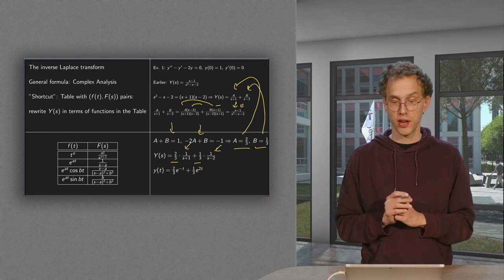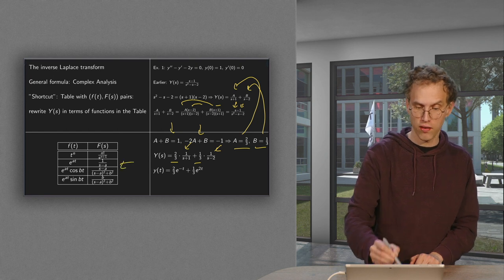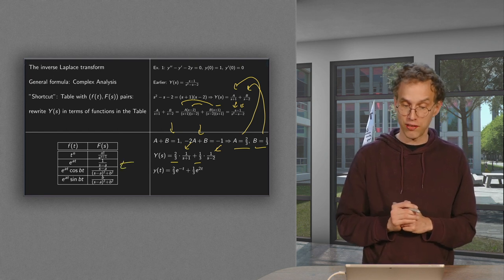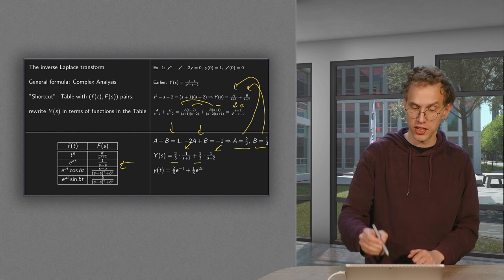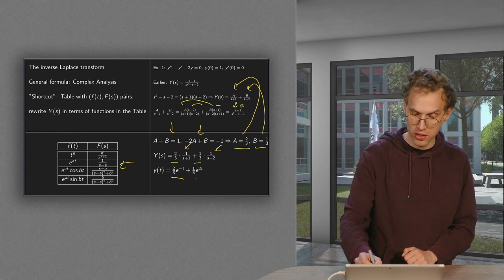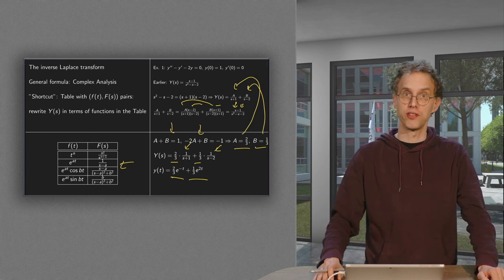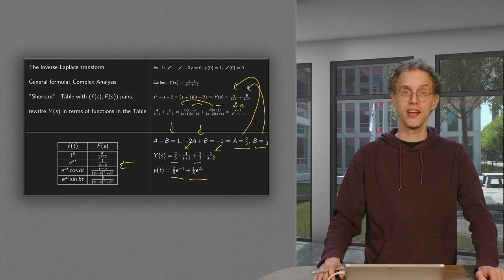But 1 over s plus 1 and 1 over s minus 2, those are in our table. They are over here. The first one with a equals minus 1, so it gives us an e to the power minus t. And the second one with a equals 2, so it gives us an e to the power 2t. So there we have our y(t) which is the solution of our initial value problem.